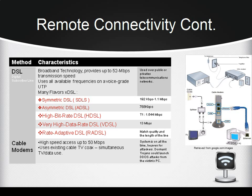Digital Subscriber Line, DSL, is a modem technology for broadband data access over ordinary copper telephone lines from homes and businesses that can provide up to 52 megabits per second. Symmetric DSL receives and sends data at the same speed, 192 kbps to 1.1 megabits per second. Asymmetric DSL, or ADSL, is called asymmetric because the download speed is greater than the upload speed — upstream is about 786 kbps and 8 megabits per second downstream. High Bitrate DSL, or HDSL, provides transfer rates comparable to a T1 line, about 1.5 megabits per second.